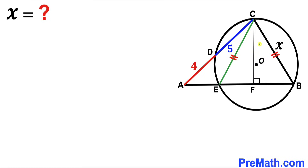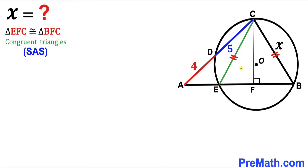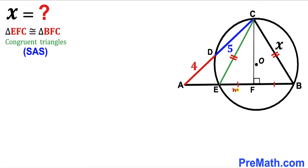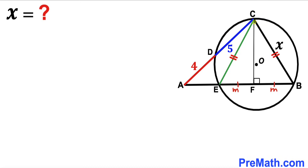In the next step, I drop a perpendicular CF onto chord EB, giving us two right triangles: right triangle EFC and right triangle BFC. These two right triangles are congruent by the Side-Angle-Side congruency theorem. Therefore, EF equals BF. We'll label segment EF as m, so BF is also m. We label perpendicular CF as h, and segment AE as t.